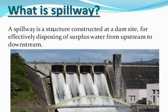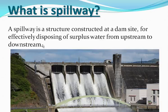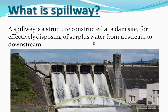I will tell you what is a spillway and what are the types of spillway. A spillway is a structure that we make on the dam. Suppose you have made a dam with a fixed capacity, say 1000 cubic meter volume. During flood time or rainy season, the water level will increase beyond that capacity. So we make a spillway structure to remove the surplus water. Spillway is a structure which is constructed at a dam side for effectively disposing of surplus water from upstream to downstream.